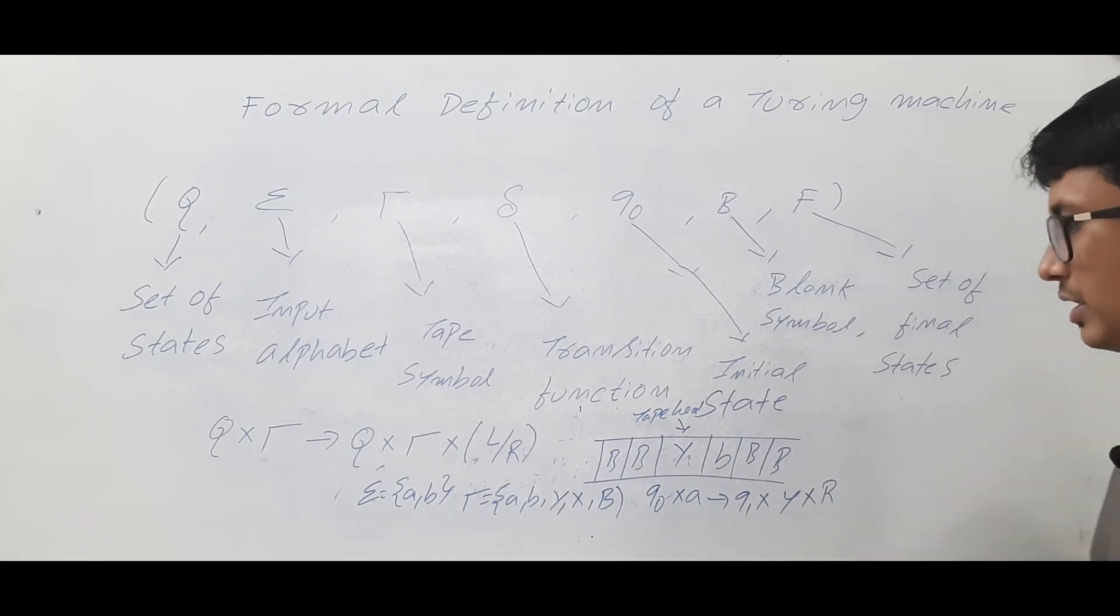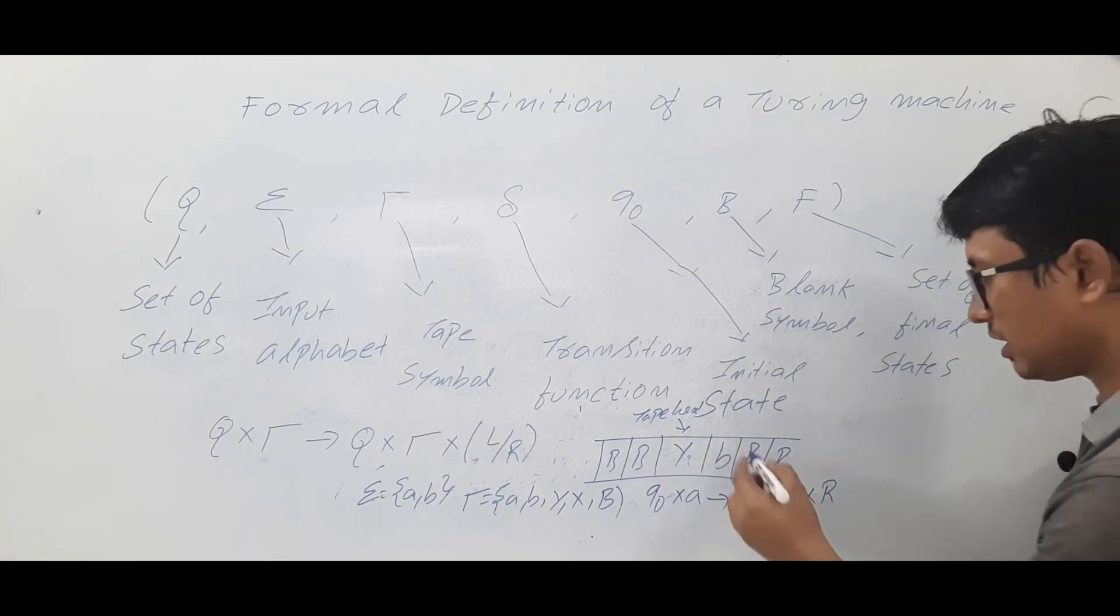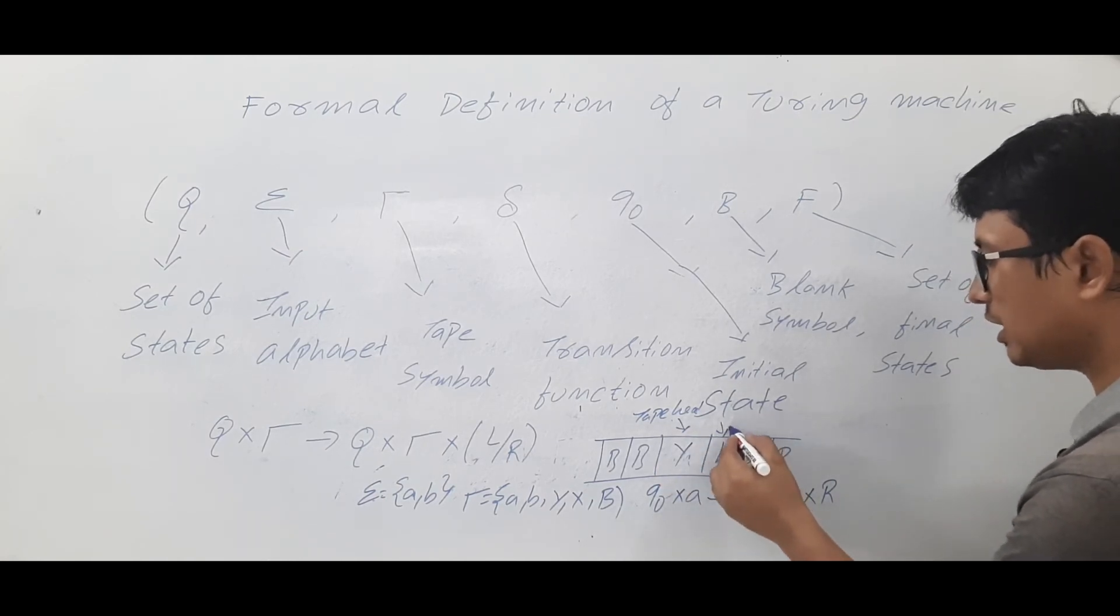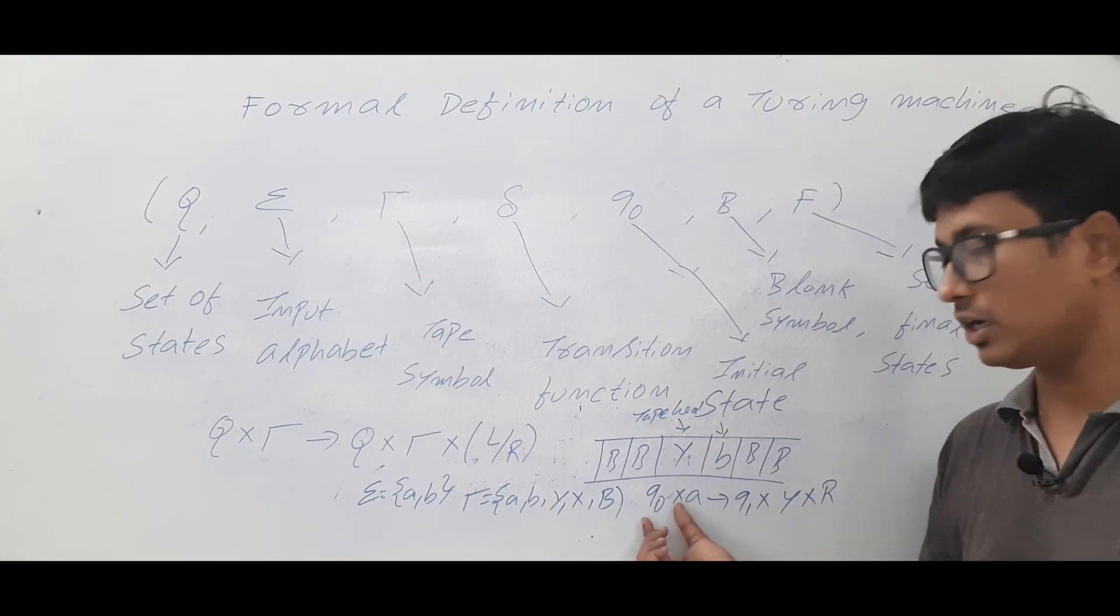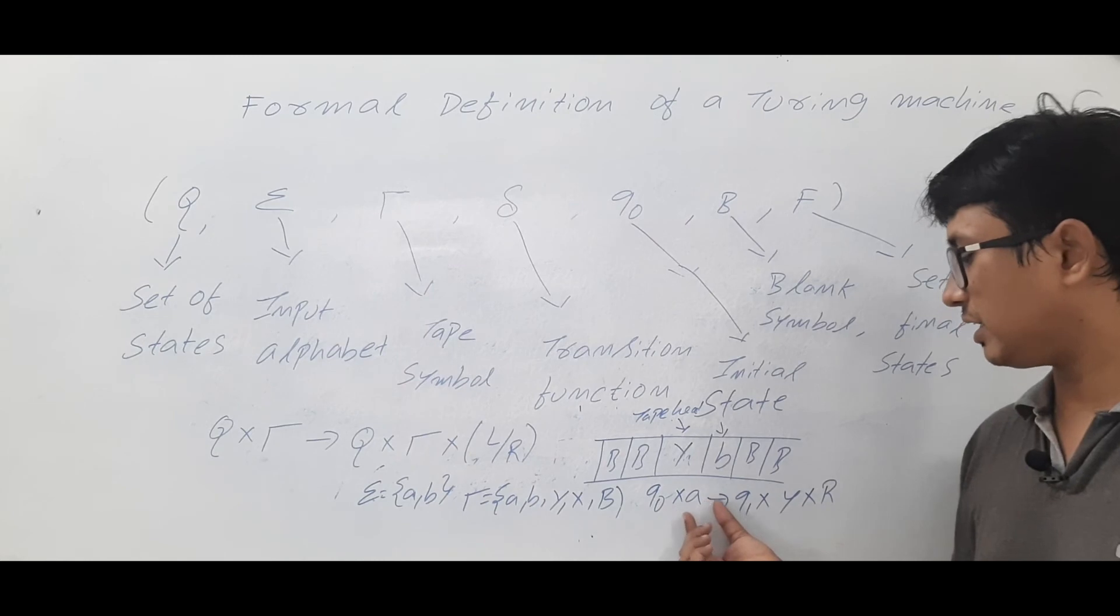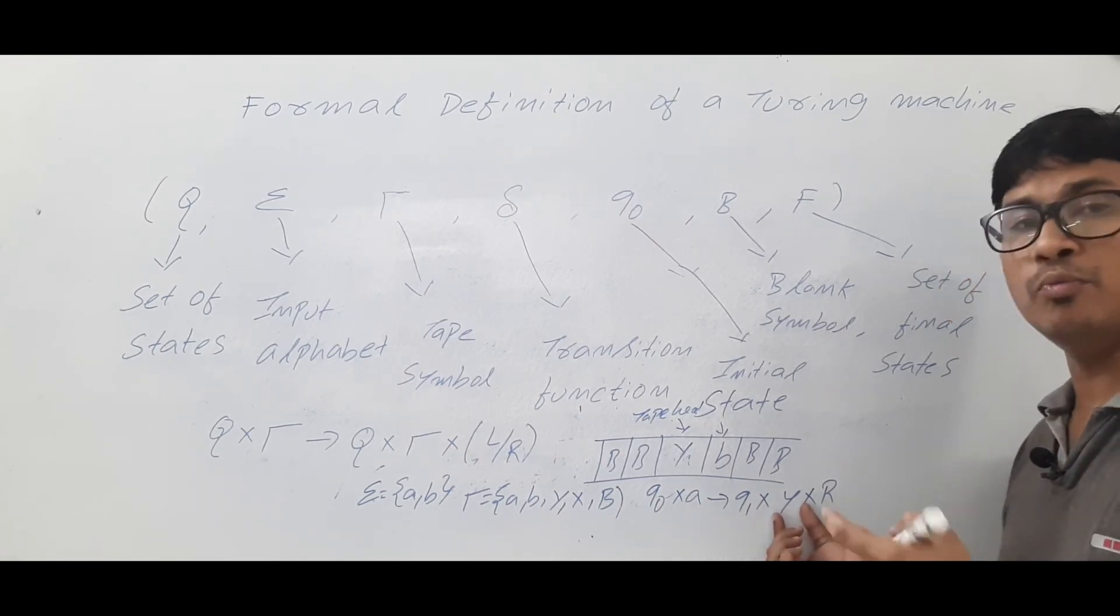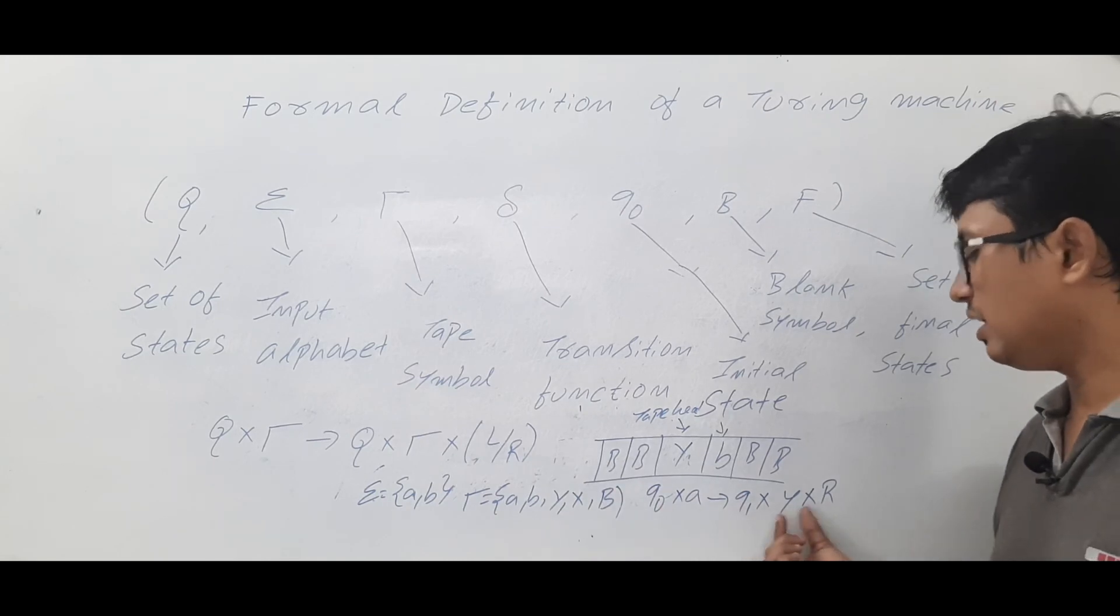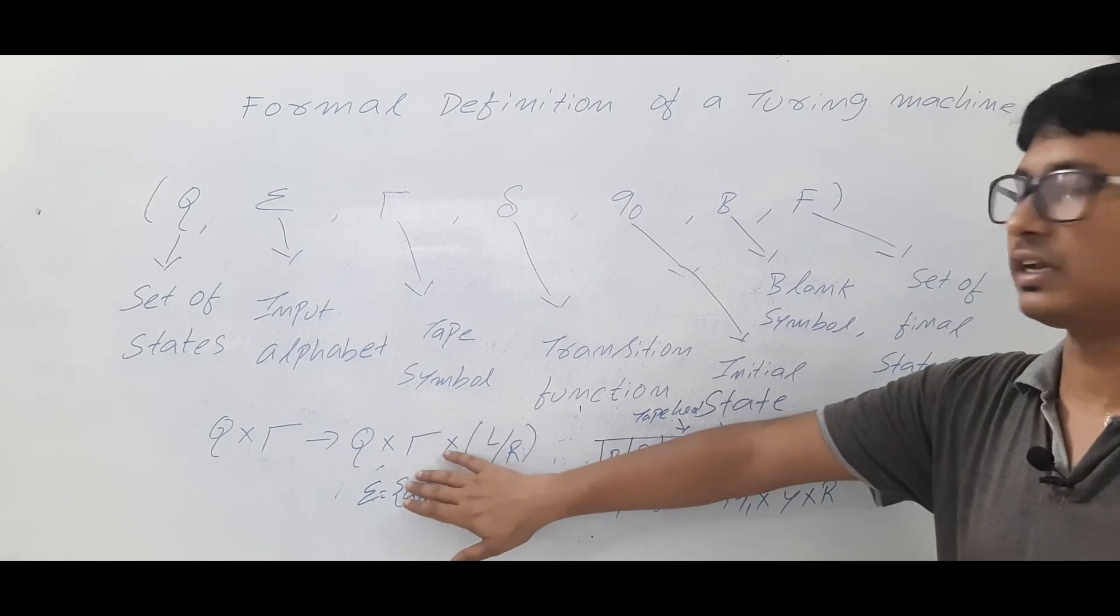So I will represent it as R. Currently the tape head is here, then if I make it move right, it will be pointing to the b. So you can see that from a state q0, on looking at a tape symbol a, I went to the state q1 - only one state I went - and I have modified the tape symbol to y and moved to the right. So this is a deterministic transition function: from a state, on looking at an alphabet, you are going to only one state.